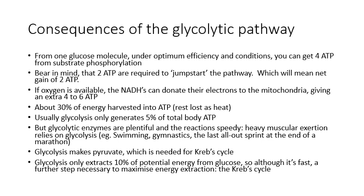At the point we have pyruvate, we have only extracted about 10% of the potential energy we can get from glucose. It's a fast step, but we need to further extract energy from the remaining 90% left in our two pyruvate molecules, and we're going to go into the citric acid cycle.